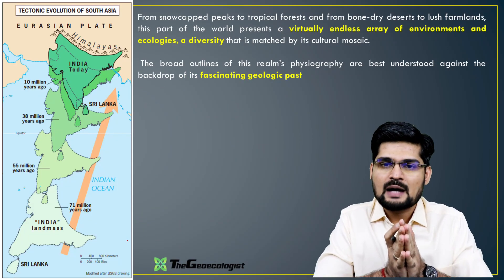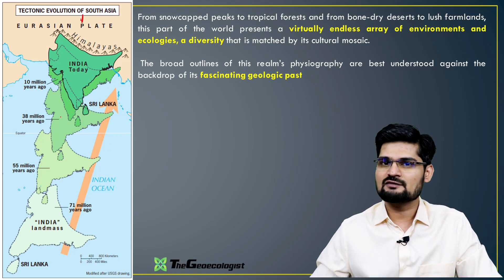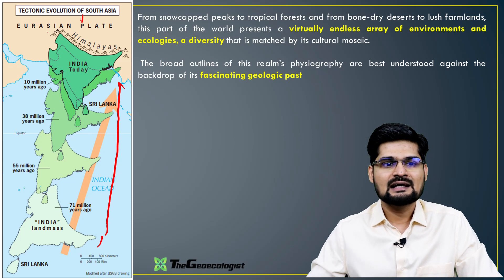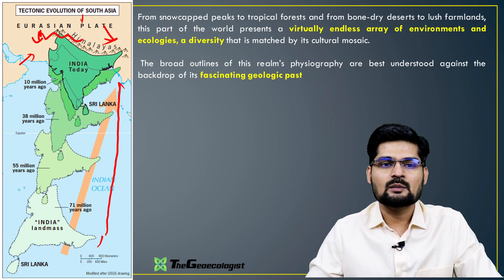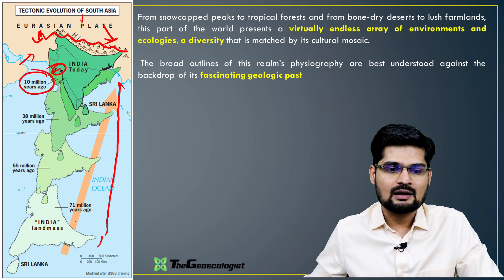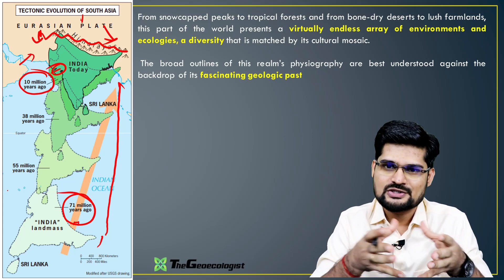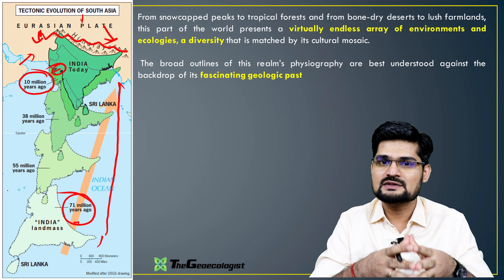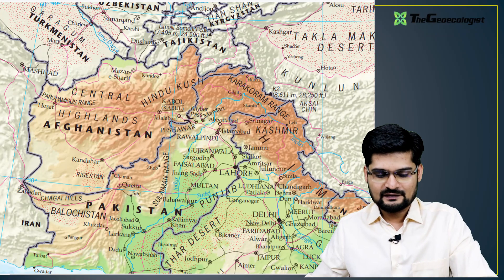Now let's look at the tectonic evolution of South Asia. The Indian plate, during Gondwana separation, started moving towards the Eurasian plate, while the ocean plate was moving in the opposite direction — their collision led to the formation of the Himalayan region. India has been in its current position for about 10 million years, with movement beginning around 65–70 million years ago at the end of the Cretaceous. This plate tectonic-associated physiography is key to the geomorphology and geography of the region.